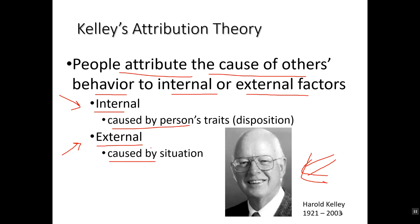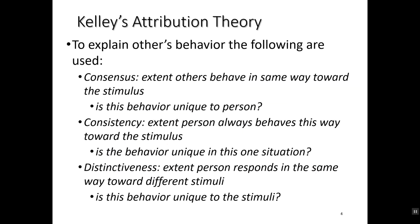The whole attribution process comes down to this: people want to make either an internal or an external attribution for a person's behavior. An internal cause is something inside the person; an external cause is something caused by the situation. Kelly used the terms situation, traits, or disposition, but I really like the idea that anything within the skin is internal, and anything outside is external. That gets us to the main part of his theory: the covariation theory. We use three pieces of information to make an attribution.